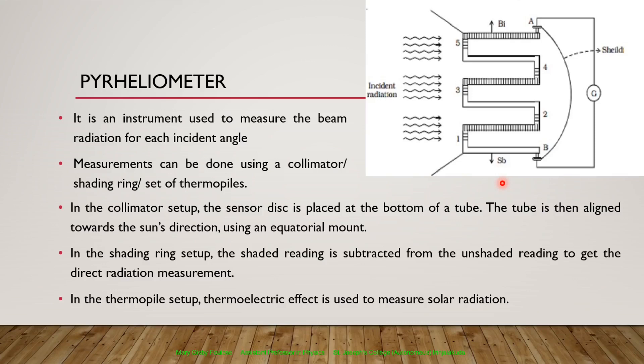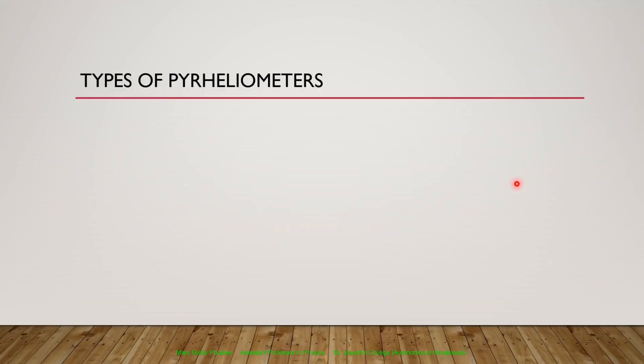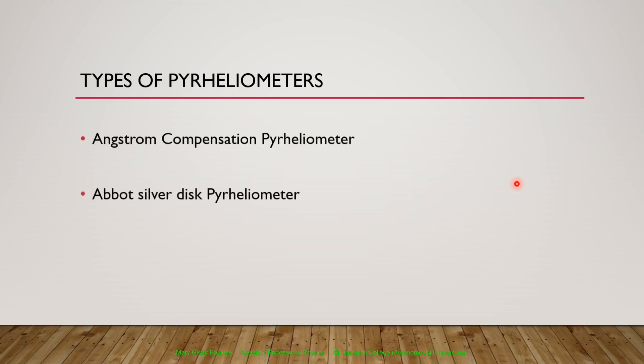Now, what are the different types of pyrheliometers? There are three types: the Ångström compensation pyrheliometer, the Abbot silver disc pyrheliometer, and the Epli pyrheliometer.